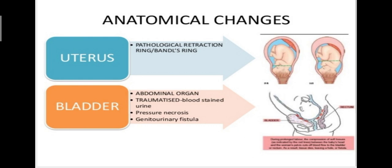Regarding anatomical changes in the bladder, the bladder becomes an abdominal organ due to compression of the urethra between the presenting part and symphysis pubis. The base of the bladder and urethra, which are nipped between the presenting part and symphysis pubis, may undergo pressure necrosis. The tissue becomes infected and may later slough off, resulting in the development of a genitourinary fistula. Bladder valves get traumatized, resulting in blood-stained urine.